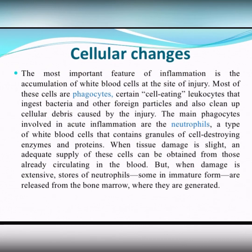Also, I said that always in the inflammation area we can see vascular and also cellular changes. About cellular changes: the most important feature of inflammation is the accumulation of white blood cells, leukocytes, at the site of injury. Most of these cells are phagocytes — microphagocytes and macrophages — certain cell-eating leukocytes that ingest bacteria and other foreign particles and also clean up cellular debris caused by the injury. The main phagocytes involved in acute inflammation are the neutrophils.